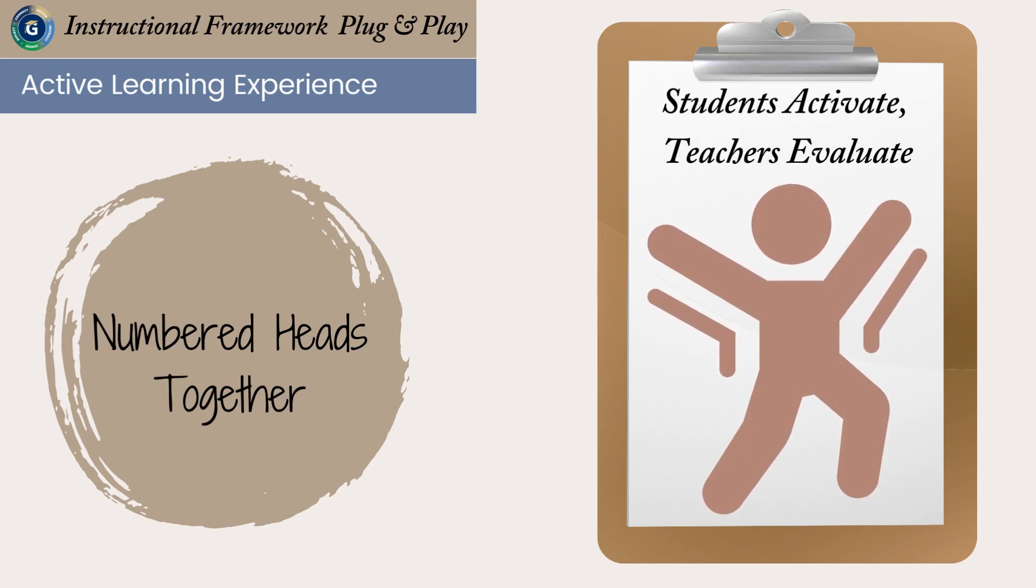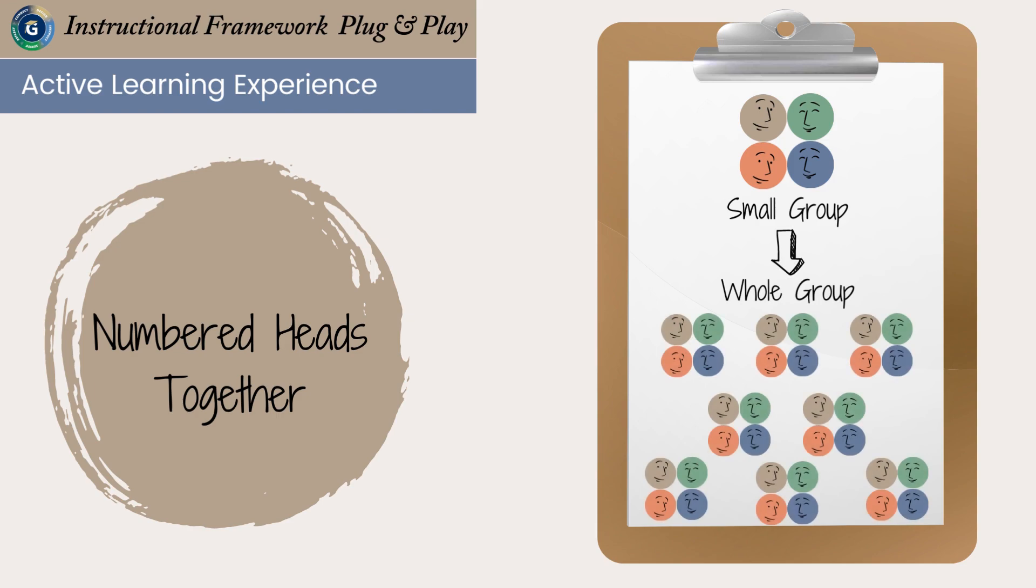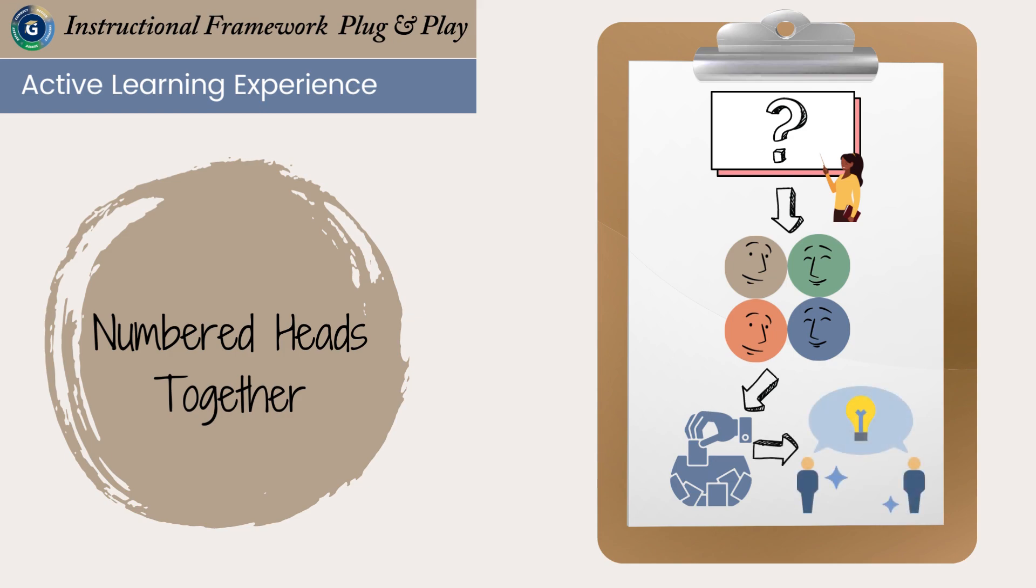The Numbered Heads Together strategy is a small group to whole group discussion structure that allows students to converse in small groups about a teacher-posed question. They then share their responses in a random calling fashion, requiring all members to participate and listen to the conversation surrounding the question.